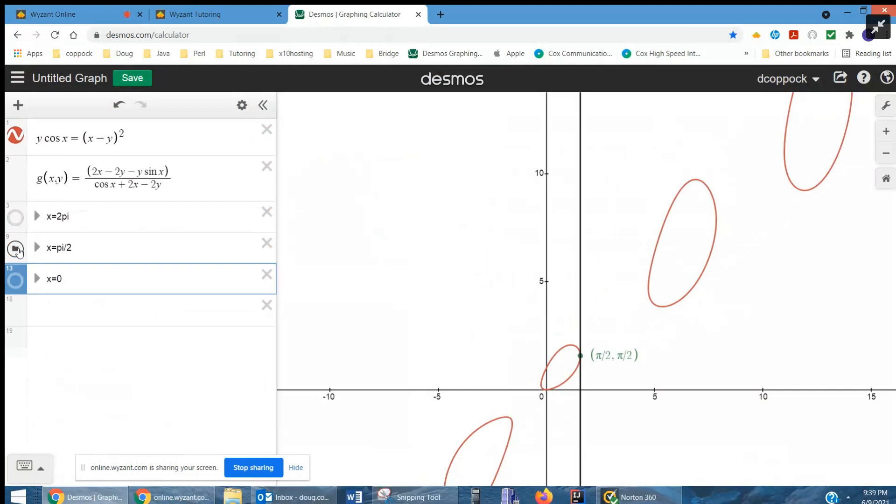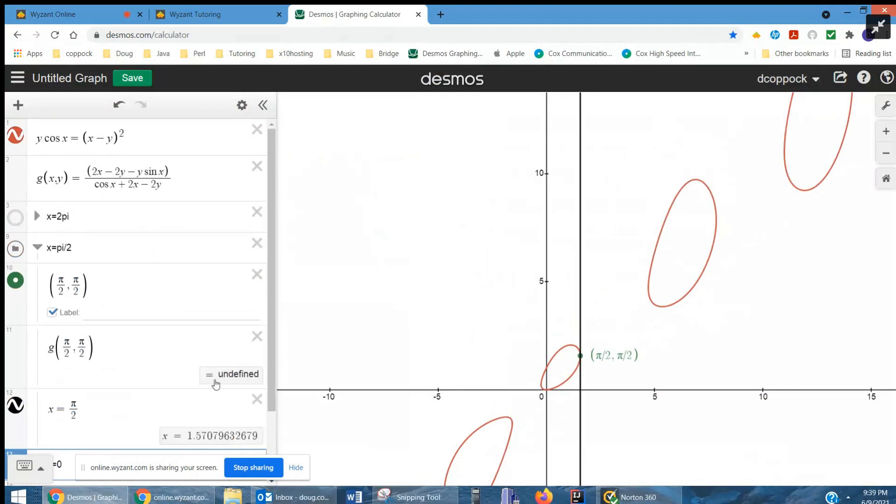Well, it turns out when you substitute π over 2 for x in the original function, you get y is also π over 2. And then when you substitute those values into g of x, y, you get undefined because that denominator is equal to 0. So the tangent line there is vertical.